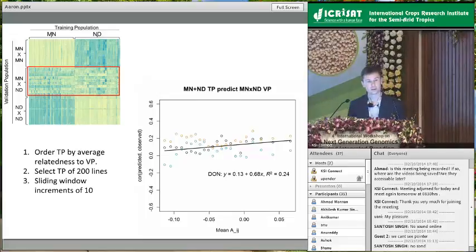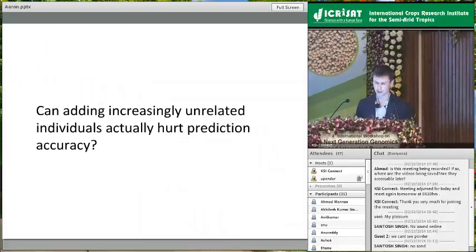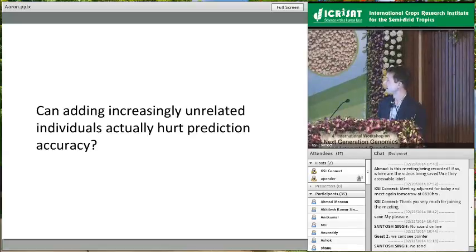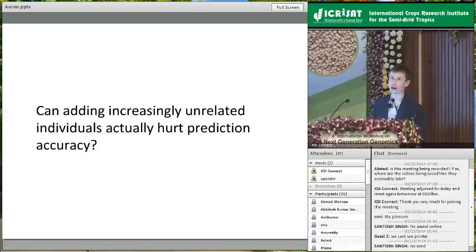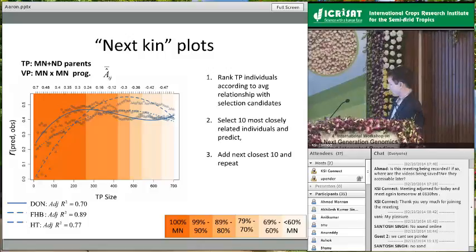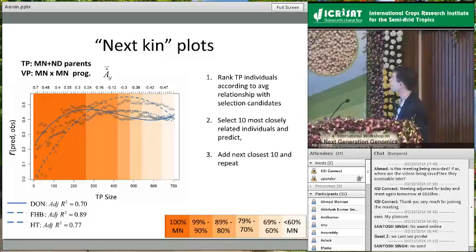This relationship between prediction accuracy and genetic distance has been published before — there's a paper in Genetics by Riedelsheimer et al. looking at this in bi-parental populations, and another by Vientes et al. What I wanted to know specifically was: as I build my training population, is it possible that adding increasingly unrelated individuals will actually start to bring my prediction accuracy down? I started looking at this using a similar approach — ranking all training individuals by their average relationship to the validation population, then adding them 10 at a time up to 700+.